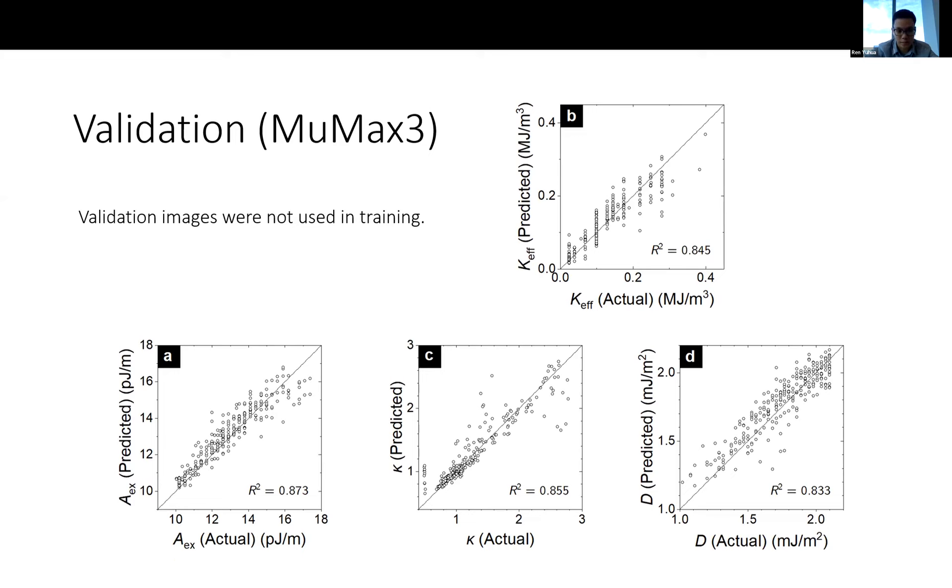We have a few plots. The K effective is the effective anisotropy. The A is the exchange, D is the Dzyaloshinskii-Moriya strength, and kappa is the thermodynamic stability factor, which is an additional parameter that is dependent on A, K effective, and D. We included this additional parameter so that we can better keep track of how our model is doing. Also, this kappa, we try to see if it agrees with the definition of kappa from A, K, and D. As you can see, the model is predicting relatively well, and all the R squared values are above 0.8.